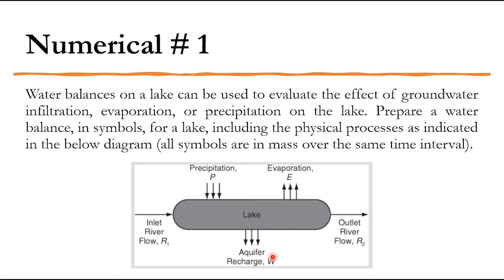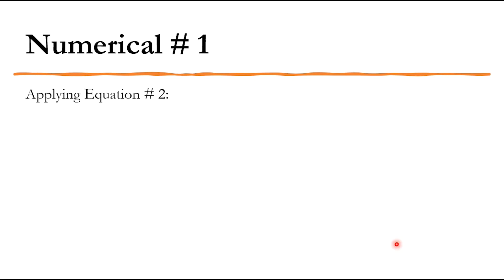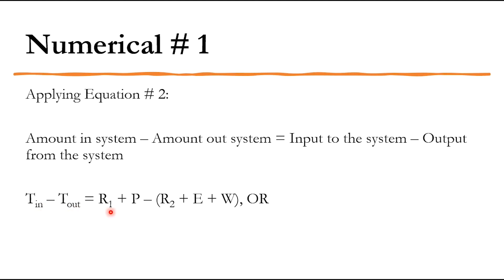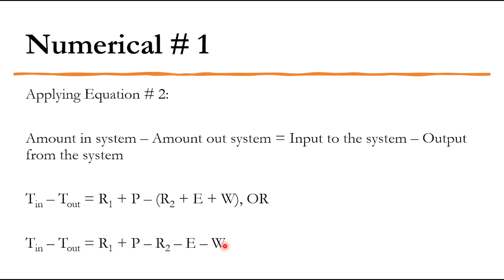Since there is no chemical reaction, we apply equation two: accumulation = amount in minus amount out. Total in minus total out equals R1 plus P minus R2 minus E minus W. So T_in minus T_out equals R1 + P − R2 − E − W. If this answer is not zero, it represents accumulation. This is the water balance representation for the lake.